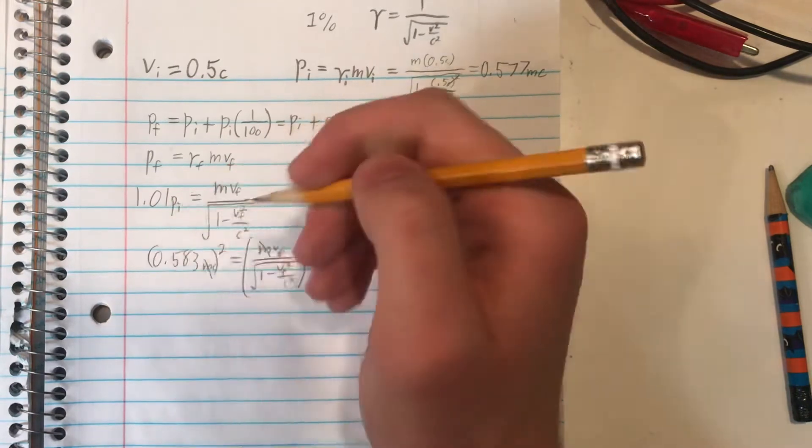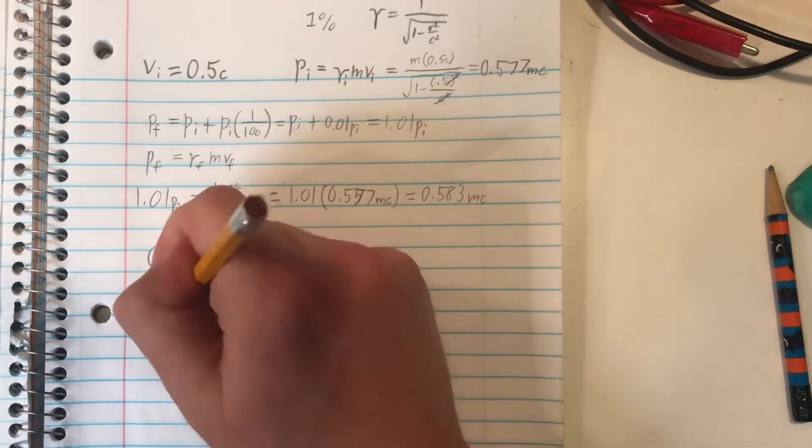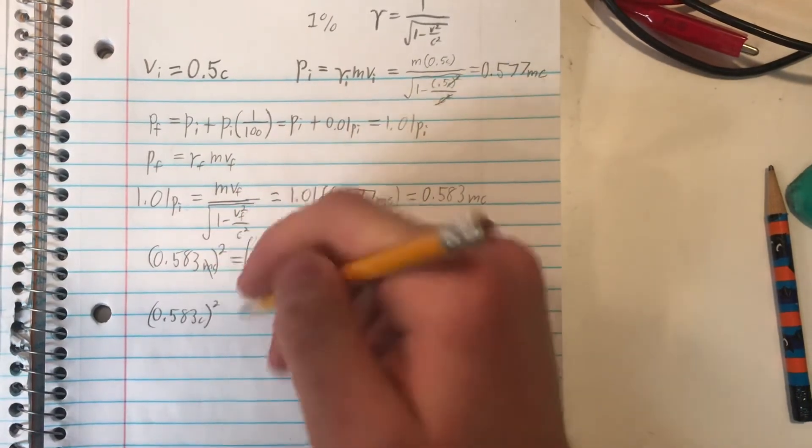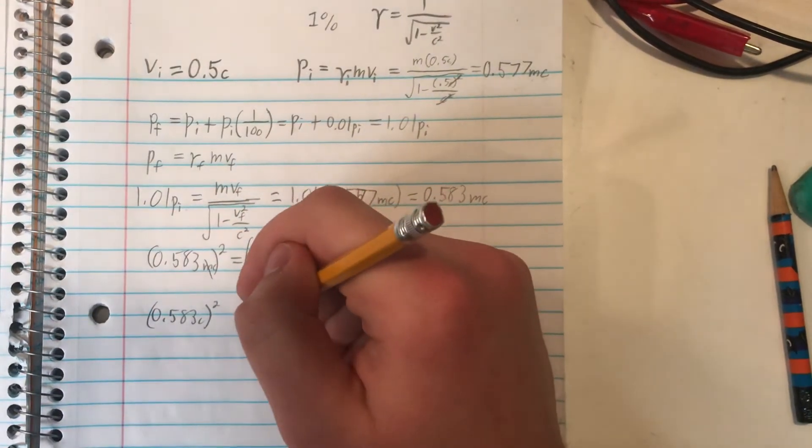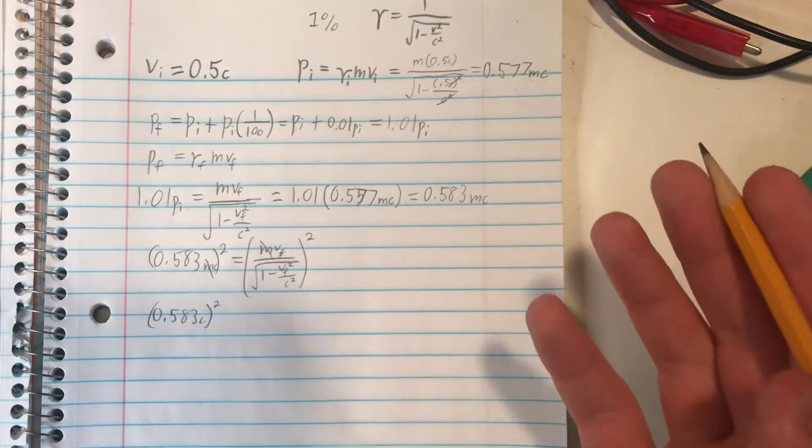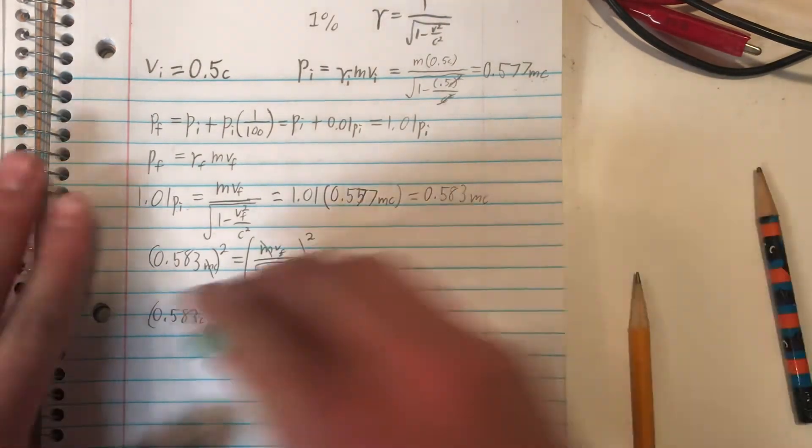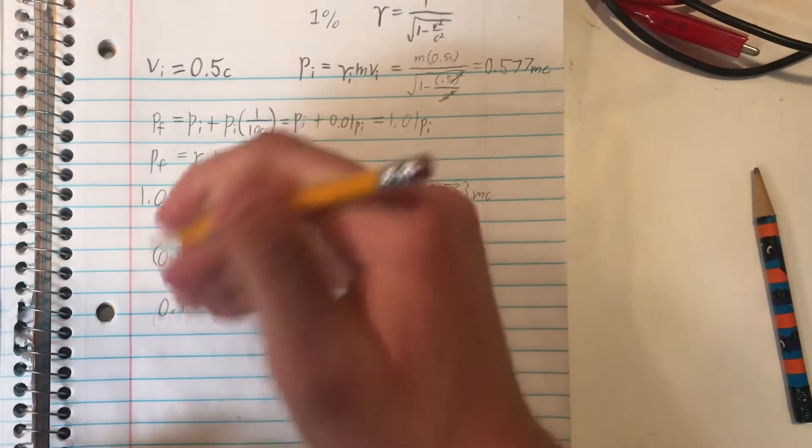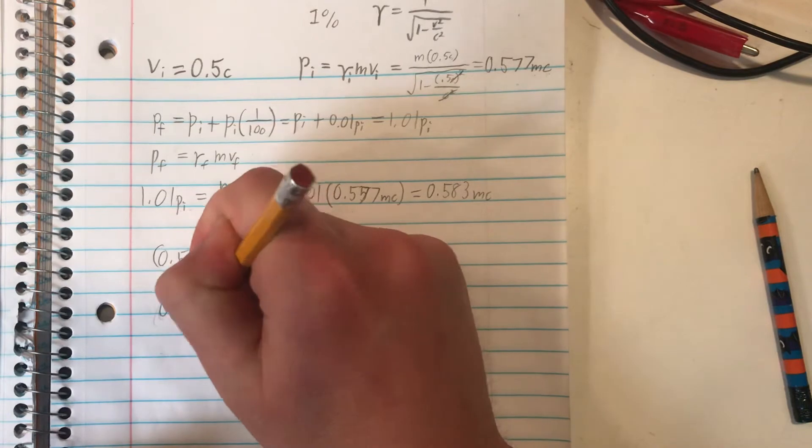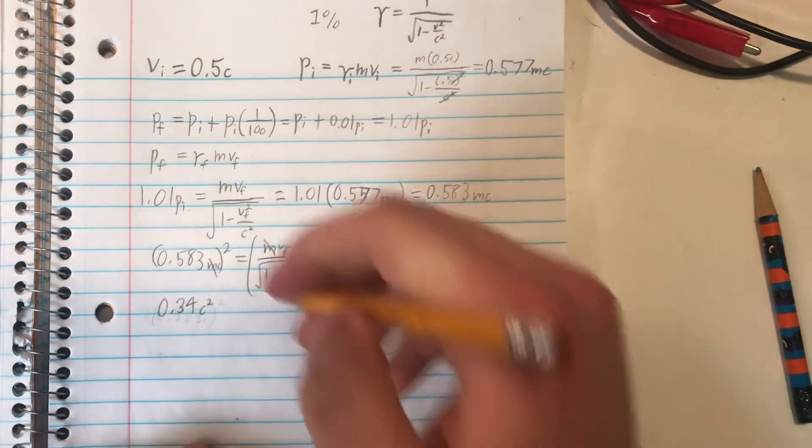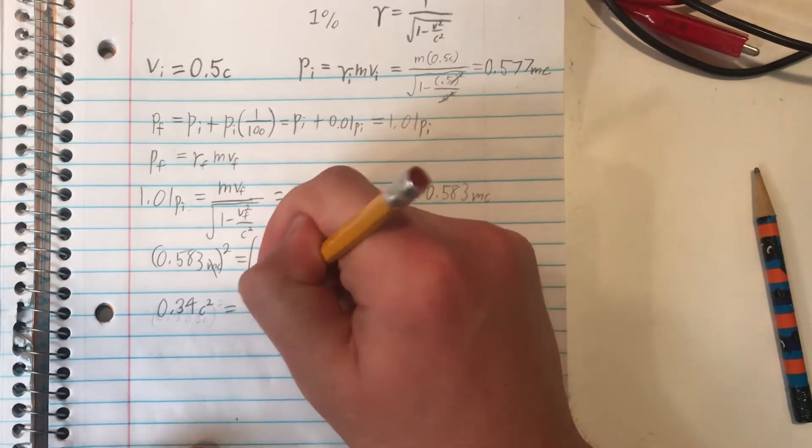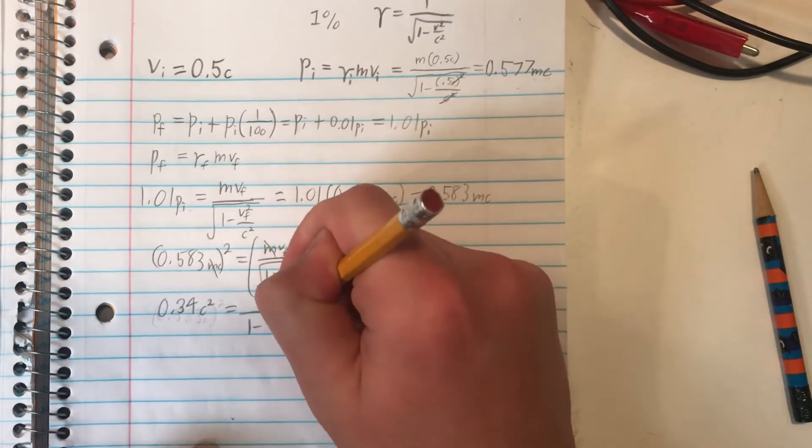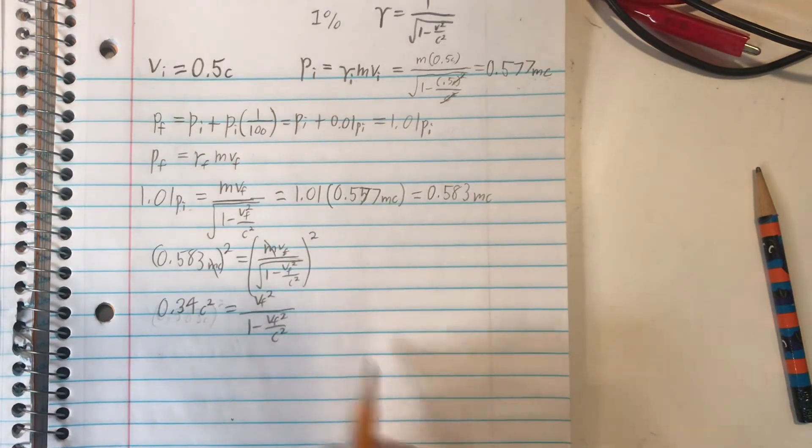So we end up with about 0.583 c squared on this side. If you plug this into your calculator and square it, you'd find that this is actually equal to about 0.34 c squared equal to vf squared divided by 1 minus vf squared over c squared. So now we've gotten rid of that square root.